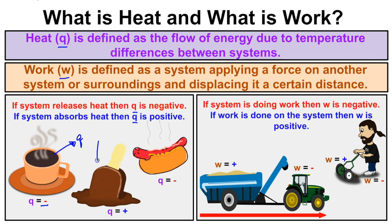This fudgesicle is absorbing thermal energy from its surroundings, so if the fudgesicle is the system, q is going to be positive. And this steaming hot dog is our system releasing heat into the surroundings, so q is negative. In summary: system releases heat → q is negative; system absorbs heat → q is positive.